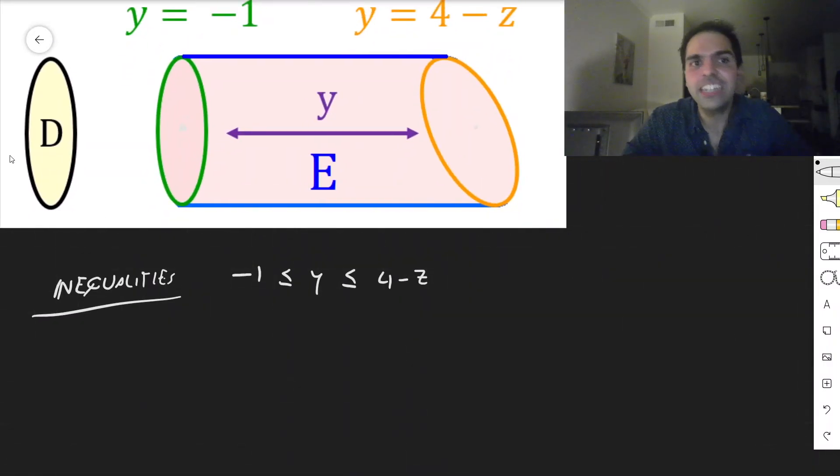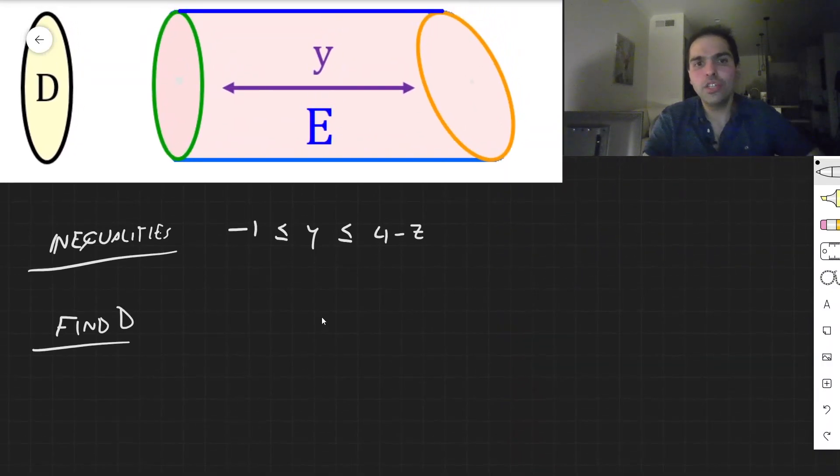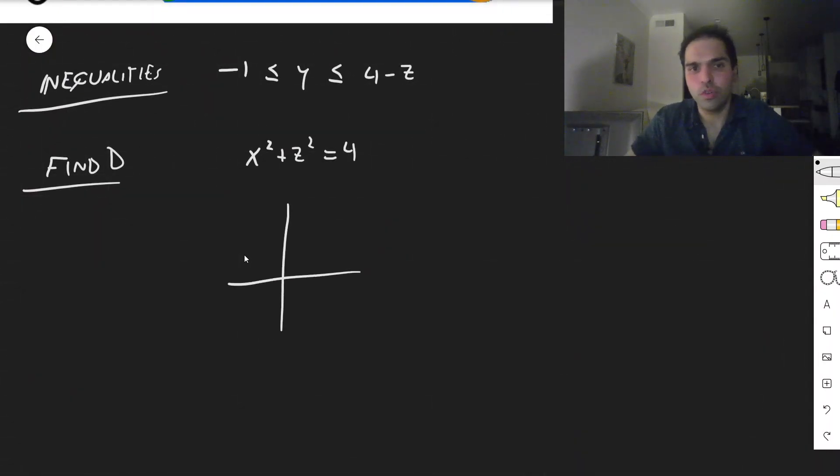And then the next thing is find the region D, which is the region where x and z lie in. And what it is, usually the shadow below the surface, but now it's kind of the shadow to the left of the surface, kind of the left side of the cannoli. But using the fact that we have x squared plus z squared equals 4, you essentially get that D is a disk of radius 2, in x and z. Which we can conveniently write in polar coordinates as r between 0 and 2, theta between 0 and 2 pi.